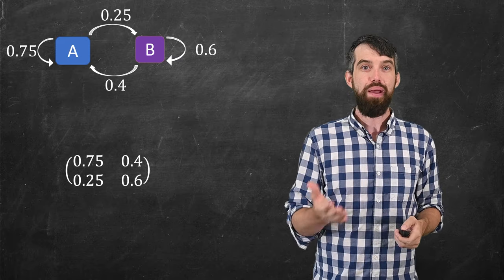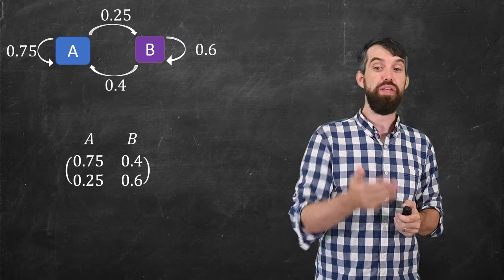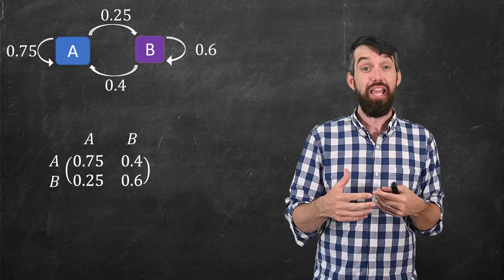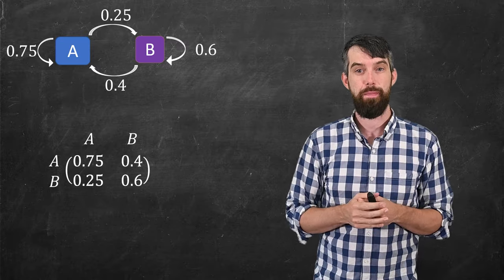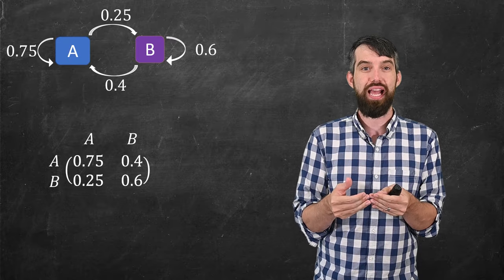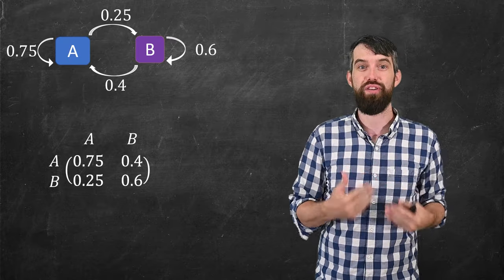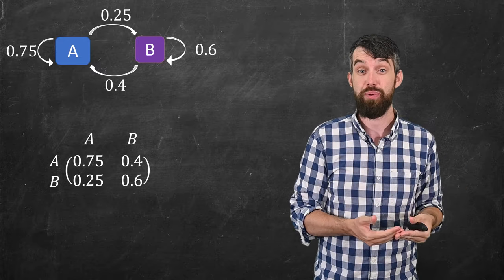The way I think about this is, I imagine that my columns are denoted with an A and a B, and I imagine that my rows are denoted with an A and a B. So something like the 0.75 represents, if I start in state A, I will end up in state A. Something like the 0.4 says, if I start in state B, it's in the second column, so if I start in state B, then I will end up in state A. That's what the 0.4 represents.